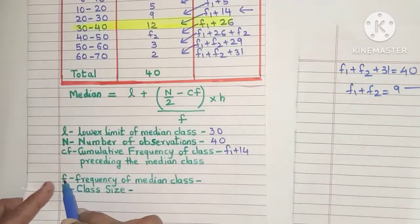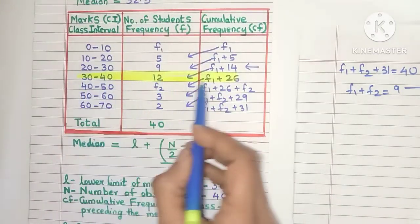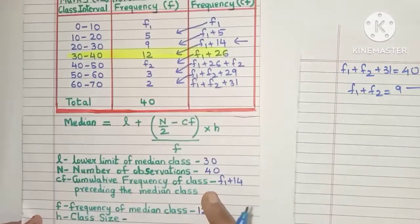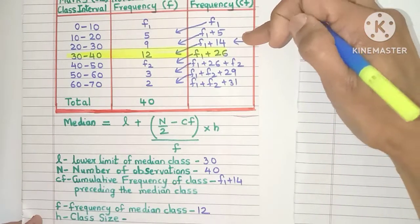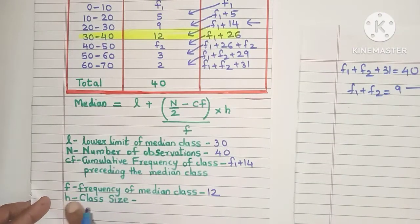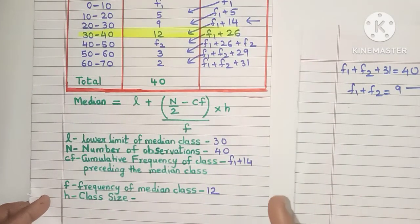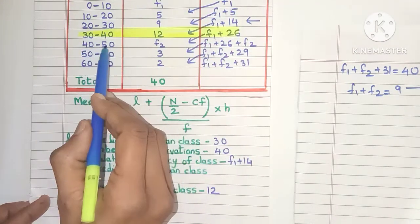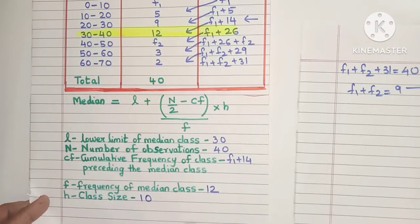Next, f is the frequency of the median class. The median class frequency value is 12. Remember: the cf value is taken from the class before the median class, and the f value is taken from the median class itself. h is the class size — take any class interval, say 40 to 50, subtract lower limit from upper limit: 50 minus 40 gives 10. We now have all the values.